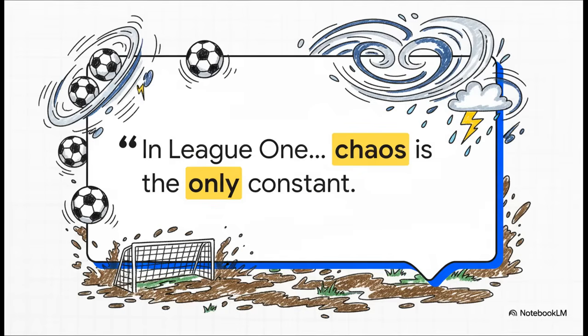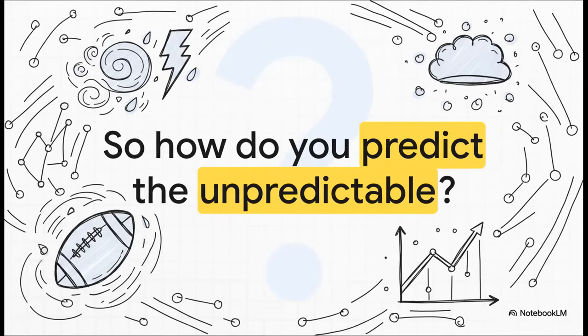And that quote just says it all, doesn't it? The goal here isn't to get rid of the chaos. That's impossible. It's about trying to understand its shape. We're in an environment where a beautiful, slick passing move is just as likely to be ruined by a boggy pitch or a sudden crazy gust of wind. So how do you even start? Well, you look for patterns. And in this explainer, we're going to break down two real world matches where the weather created two completely different kinds of puzzles for our AI models to try and solve. It's a really fantastic look at how the same technology has to adapt to totally different types of chaos.